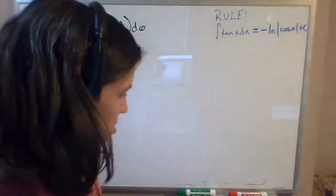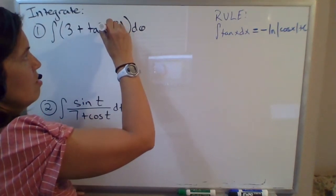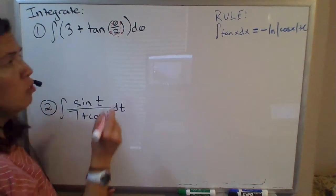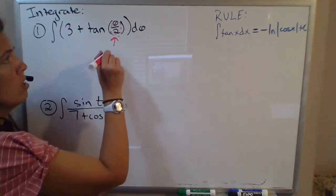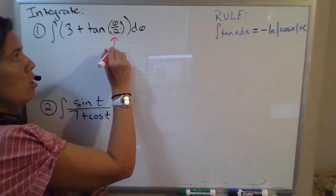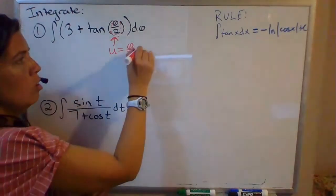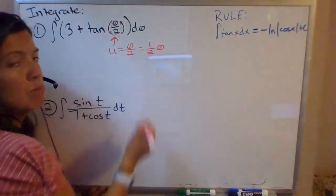So because there's this inner function, if it's not as simple as just your independent variable inside of your tangent function, then technically we need a u substitution here where we can let u equal theta over 2, which let me point out theta over 2 could be written as 1 half times theta.